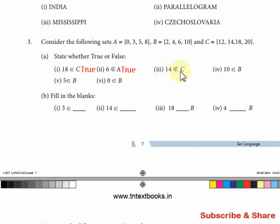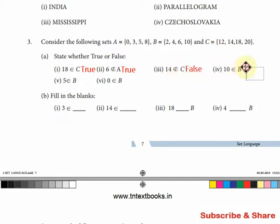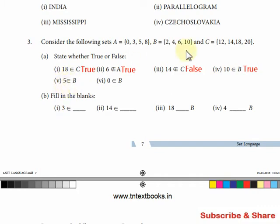14 belongs to C — 14 is in C. So it says 14 lacks except for C, but they are ill and it is false. Next: 10 belongs to B — 10 wants to be in B. 5 belongs to B — 5 wants to be in B, 5 in A — false.